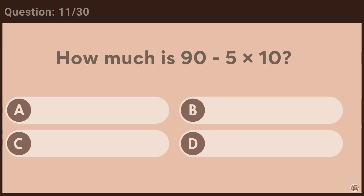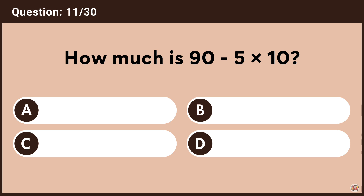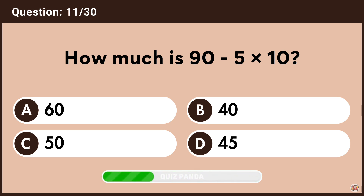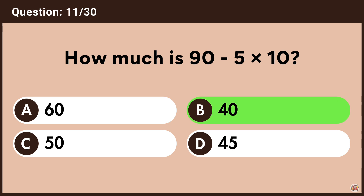How much is 90 minus 5 multiplied by 10? Answer B, 40.